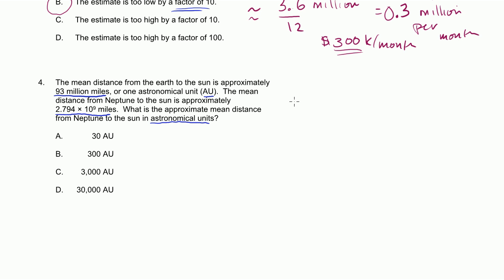So essentially we want to divide the average distance of Neptune, 2.794 times 10 to the ninth miles, divided by one astronomical unit, which is 93 million. When you write it like this, it's kind of hard to see what's going on, but what we can do is write this guy right here in scientific notation as well. So 93 million, we could say this is 9.3 times 10 to the 1, 2, 3, 4, 5, 6, 7th power.